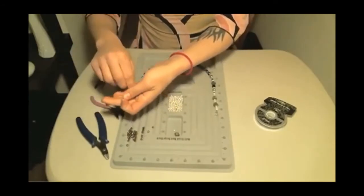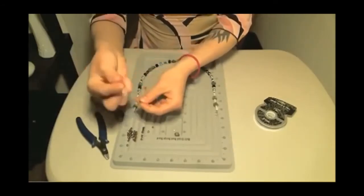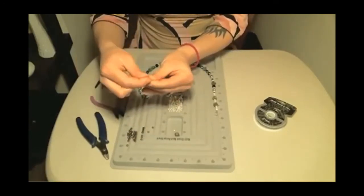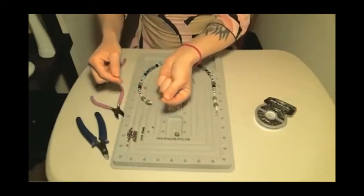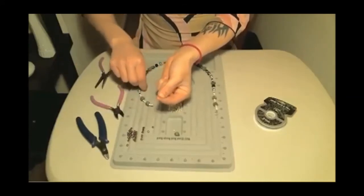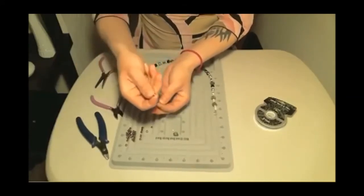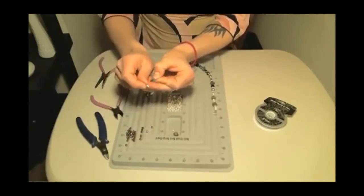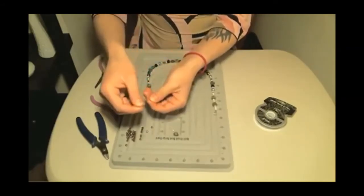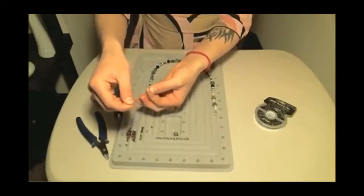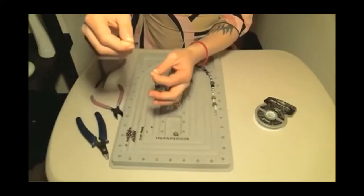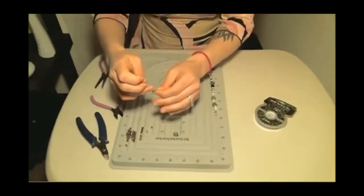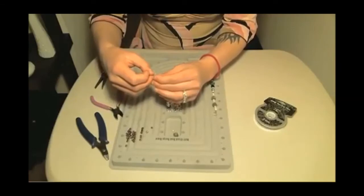So we're going to take our other crimp bead and just put the wire right through it and just kind of grasp it so it doesn't slide all around. And then take your lobster clasp and put the wire right through that hole. And then you're just going to slide the crimp bead down towards the end, down towards the beads, and kind of let that drop down. And now you're going to bring it back through the crimp bead just like you did with the other one.